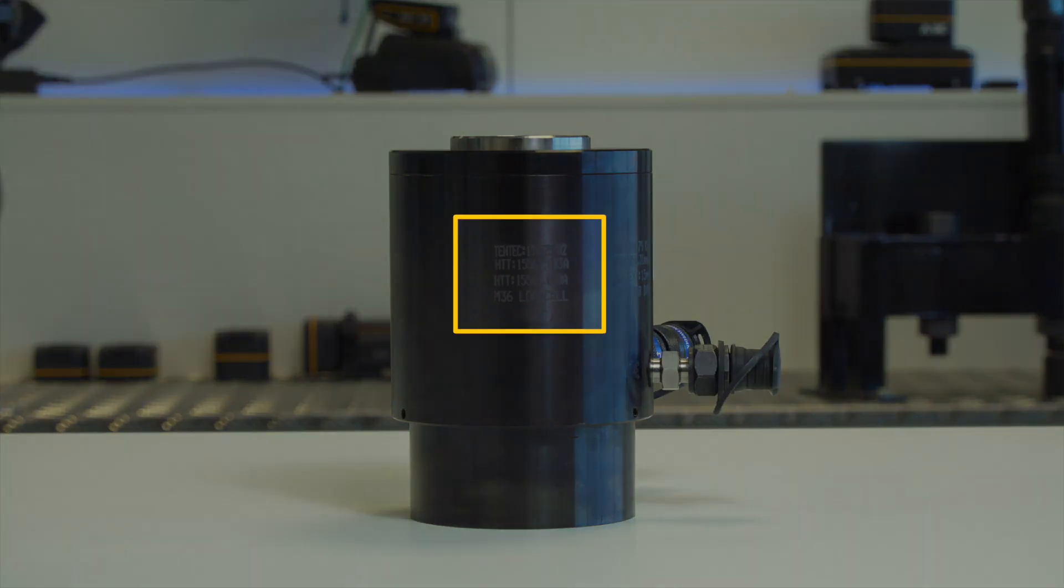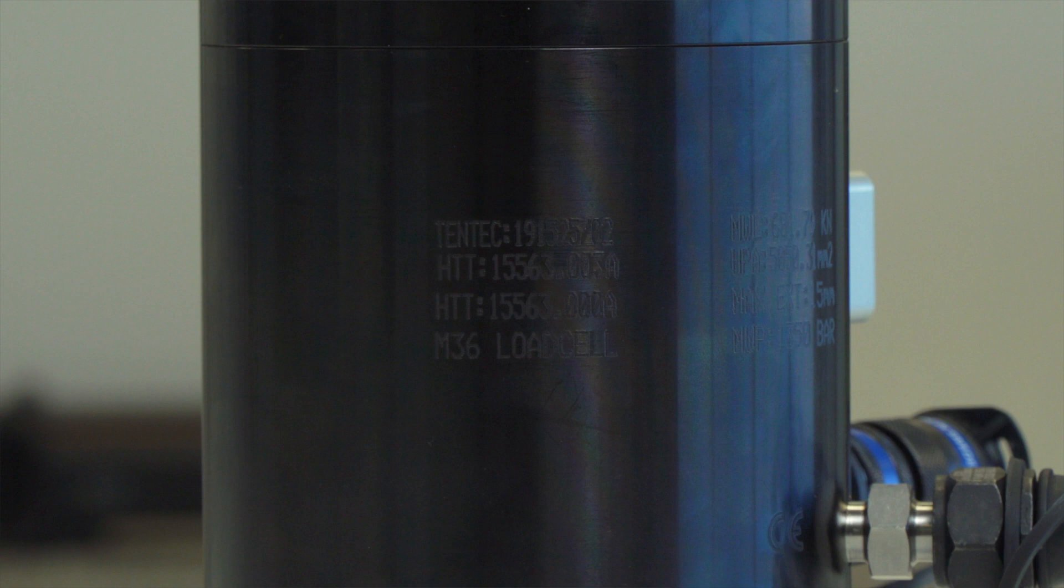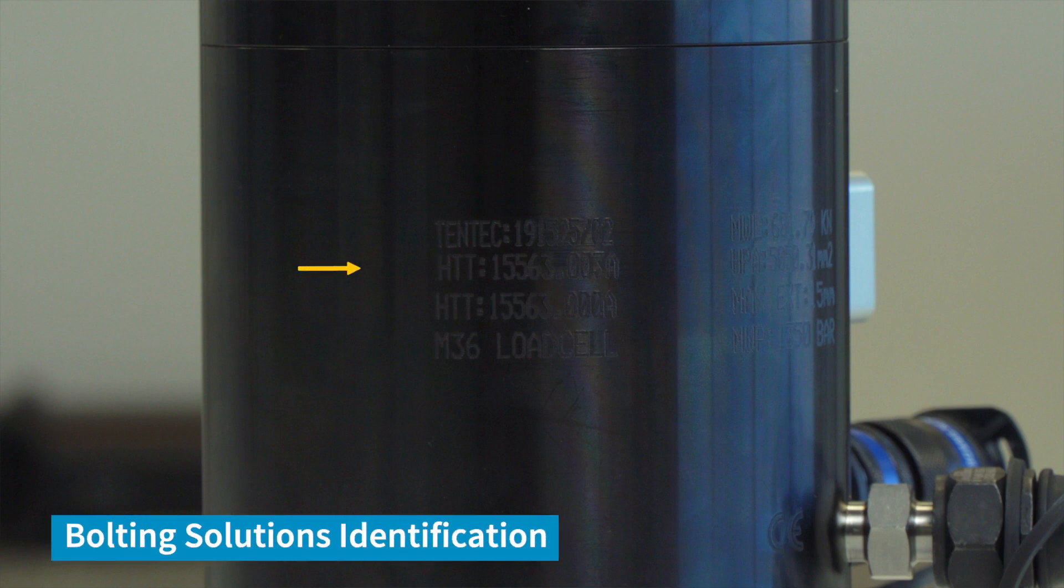All of the part numbers or drawing numbers have four parts. The first part is always HTT dot. This depicts that it is a bolting solutions drawing number.